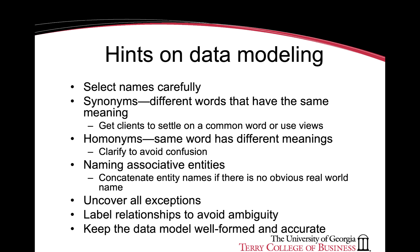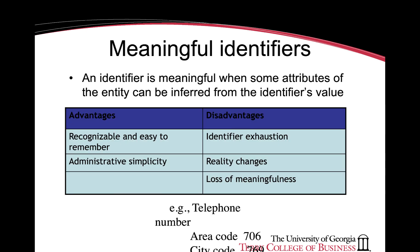Here are a few other tips on data modeling to keep in mind, especially on attribute and entity names. The last point to keep in mind is on the names of identifiers. While meaningful identifiers are often recognizable and easy to remember, the problem is that they can be exhausted very easily, and as such, non-meaningful identifiers are preferred. Non-meaningful identifiers serve a single purpose, which is to uniquely identify an instance of an entity.